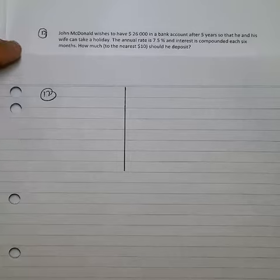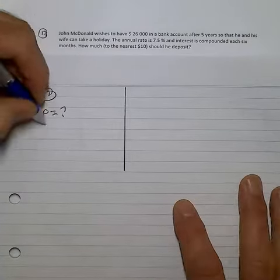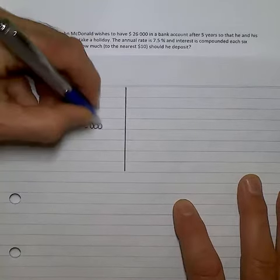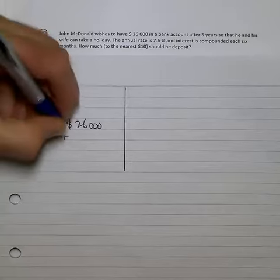Question 12 is a problem where you want to find out how much he needs to invest. So the principal is what we're after. We have the amount in the account of $26,000, and we have the interest of 7.5%.